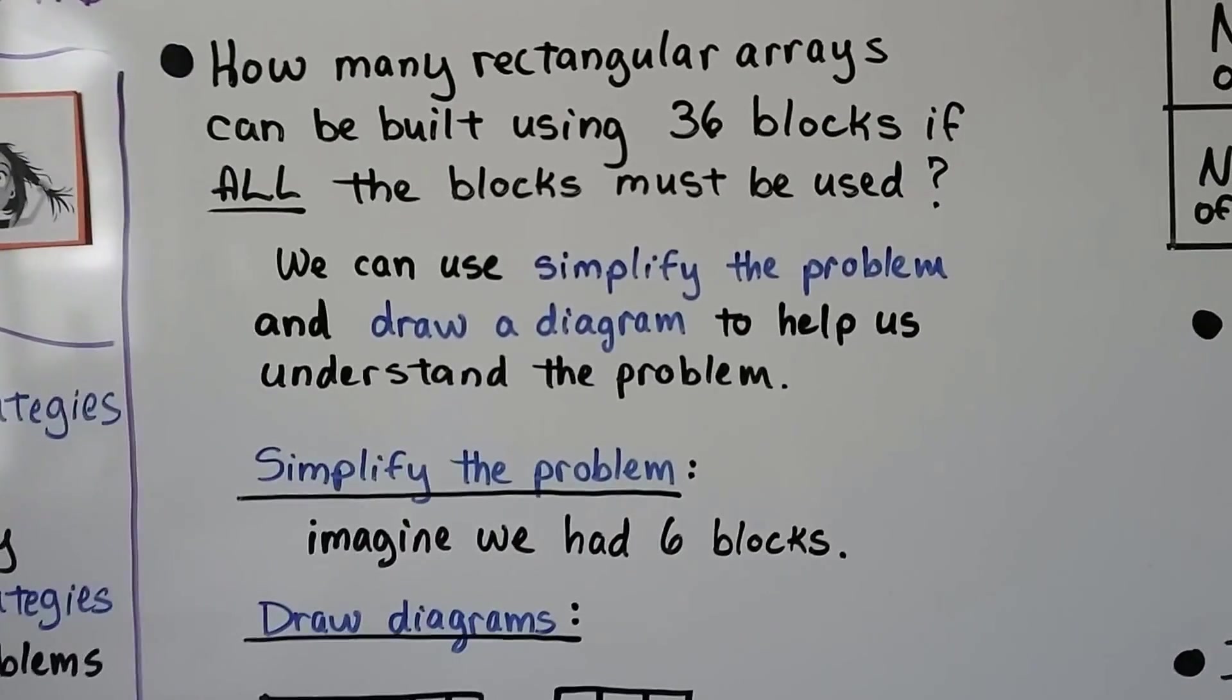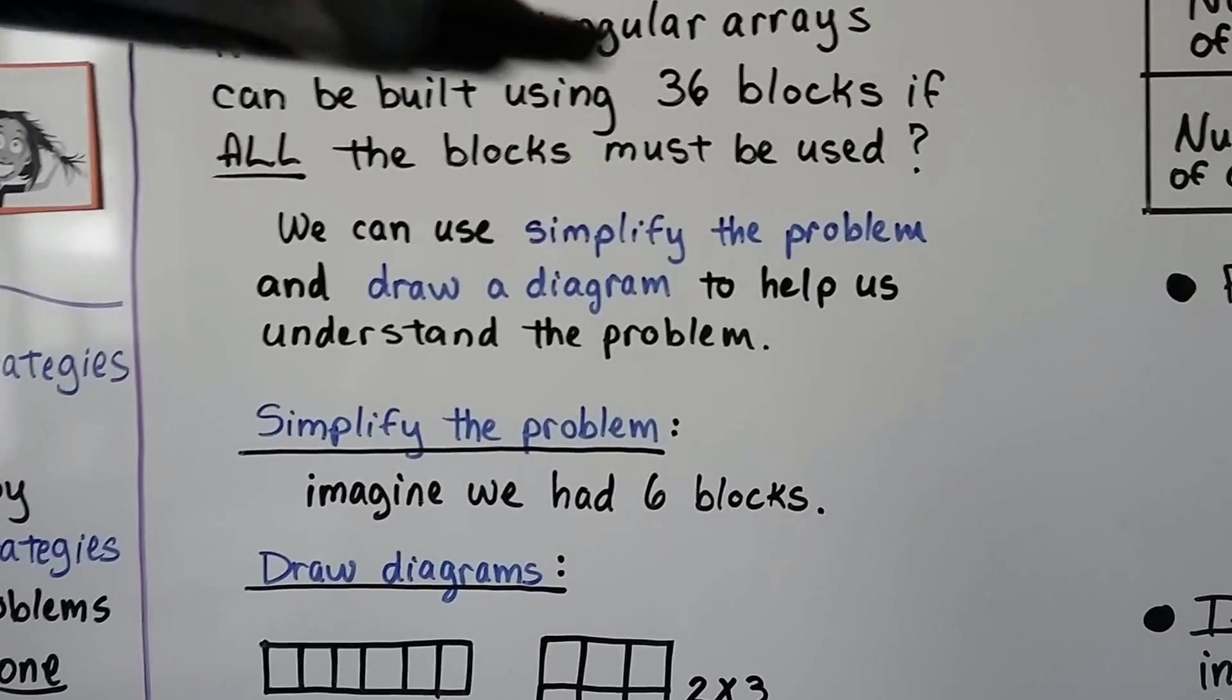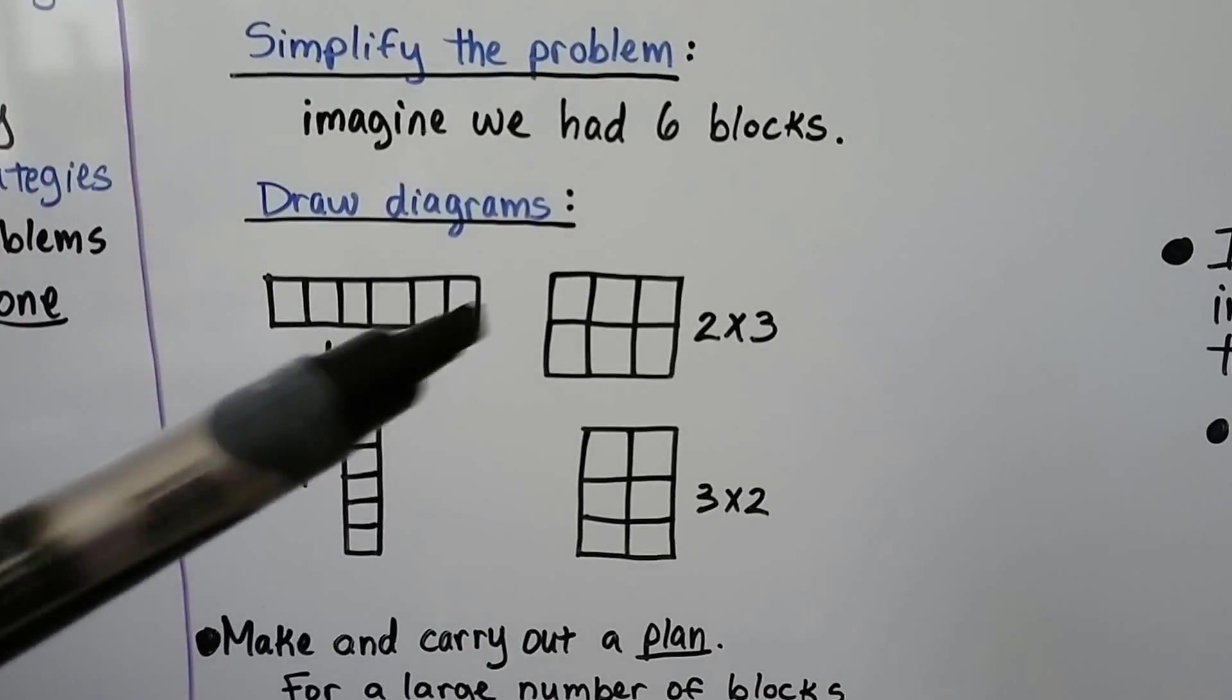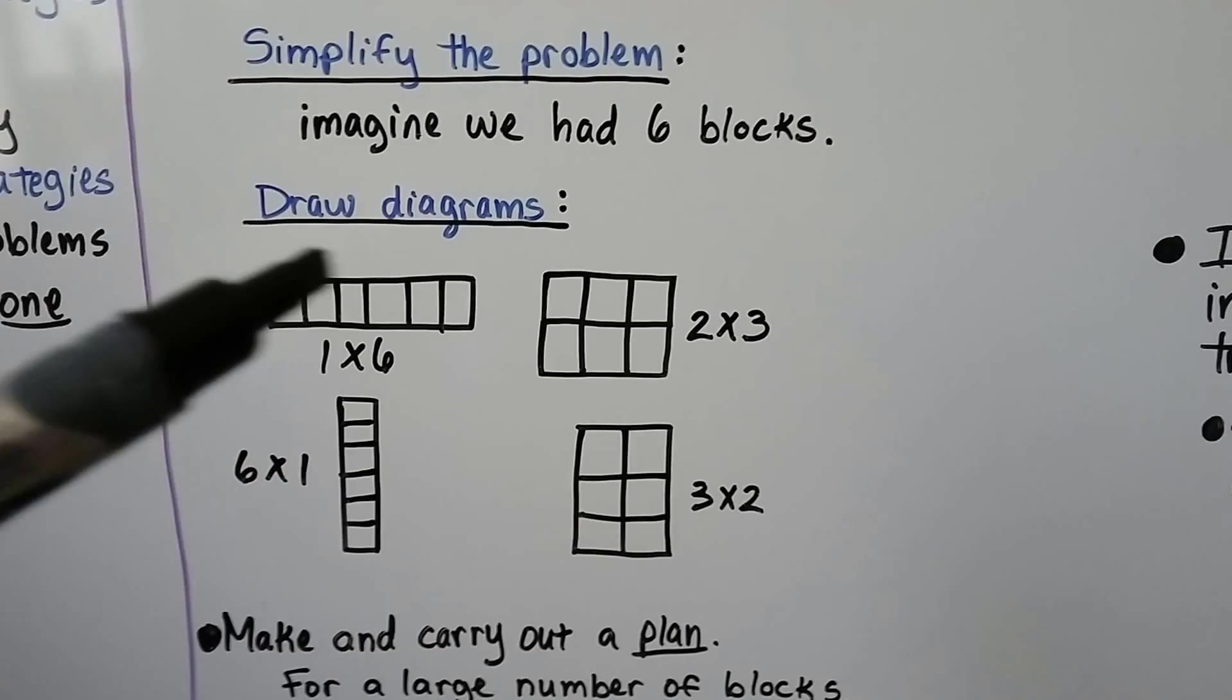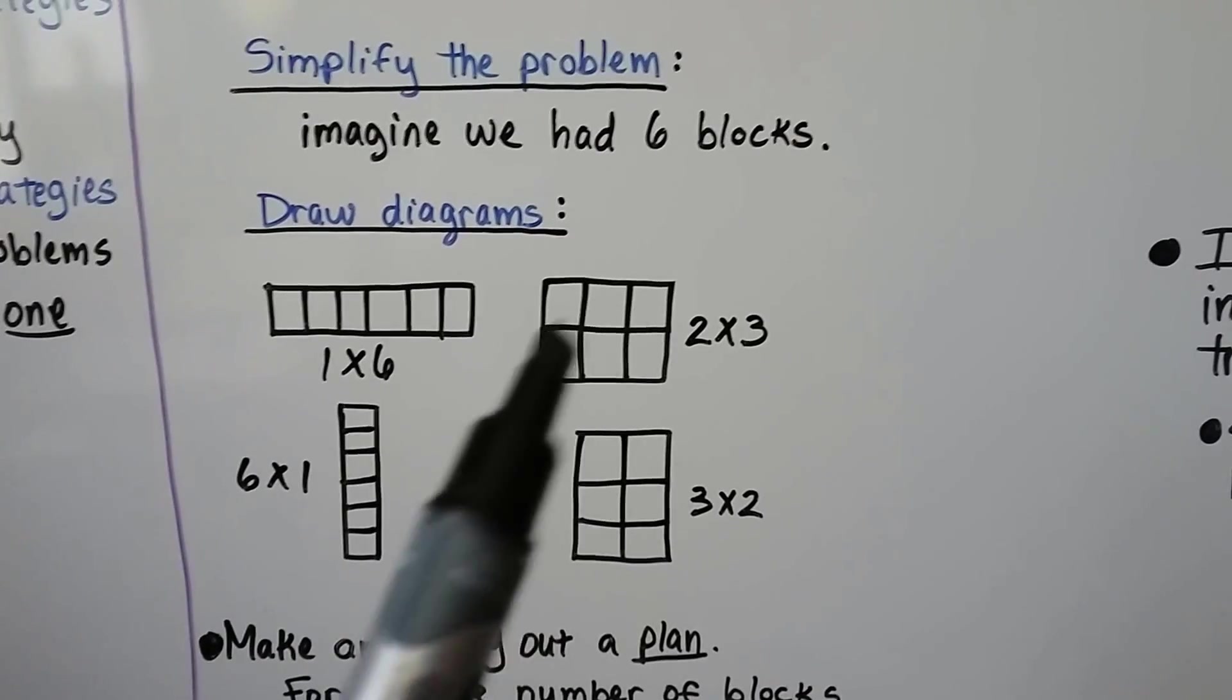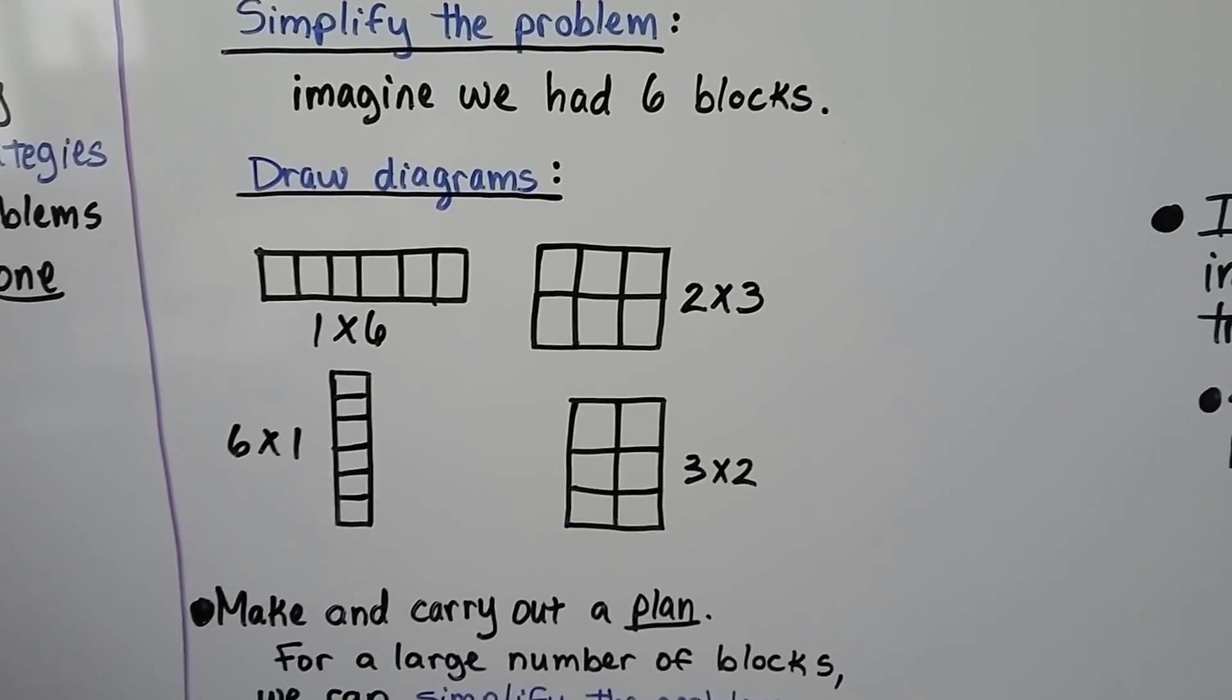If we simplify the problem, instead of using 36 blocks, we'll just use 6. So how many rectangular arrays can be built using 6 blocks if we use all the blocks? We can draw some diagrams. We can make a 1 by 6, it's one row of 6 blocks. We can make one column of 6 as a 6 by 1. We can do a 2 by 3, two rows of three columns. We could also do a 3 by 2, three rows of two columns.